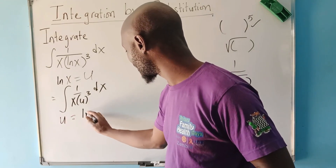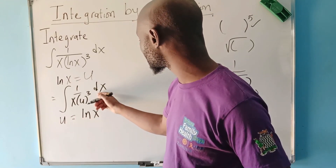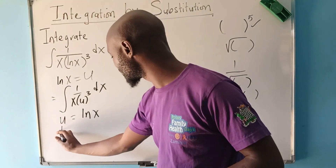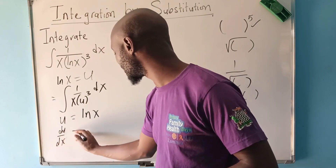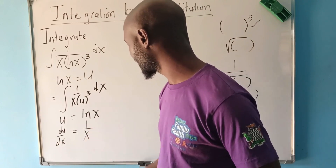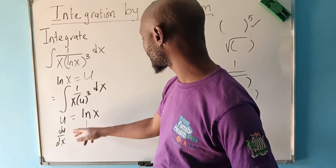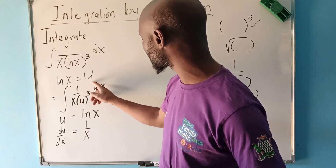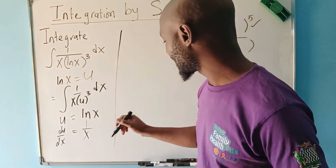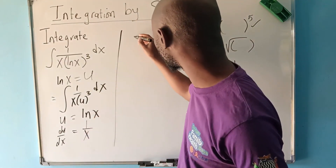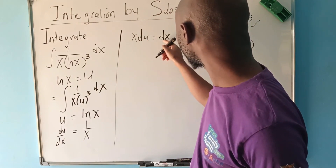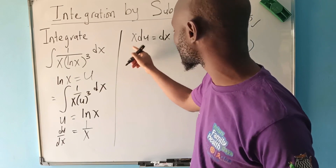Once you replace u for one of the functions, you have to use that u to change dx and simplify the other x, so that you remain with u only. We have u equal to ln(x), and we need to find dx. We can only find it by differentiating: du/dx equals one over x. We then make dx the subject, giving us dx equals x du.